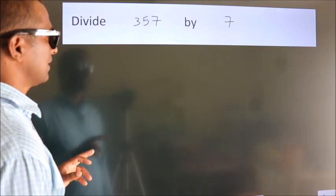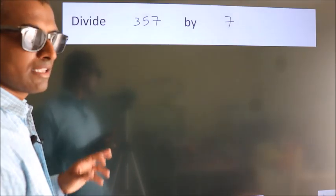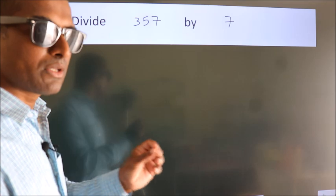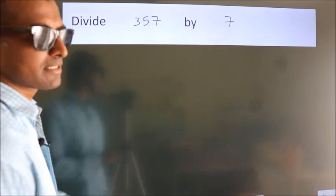Divide 357 by 7. To do this division, we should frame it in this way.